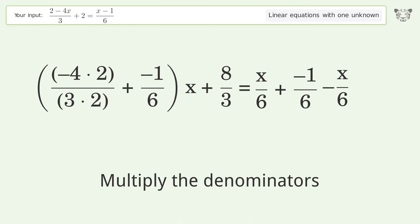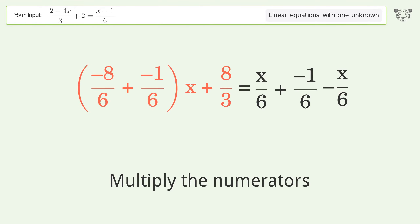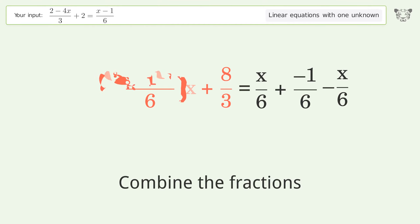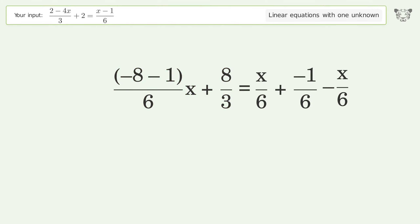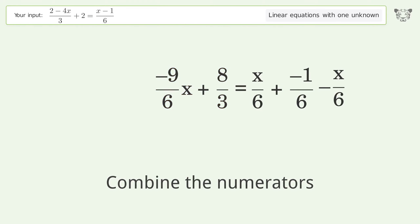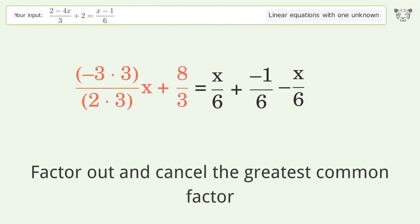Multiply the denominators. Multiply the numerators. Combine the fractions. Combine the numerators. Find the greatest common factor of the numerator and denominator. Factor out and cancel the greatest common factor.